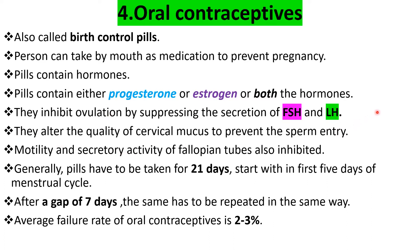Another function of the pills is making the cervical mucus become thick. Normally in the cervical region, mucus is very thin and allows sperms to swim easily towards the uterus. When the mucus becomes thick, sperms find difficulty moving towards the uterus. Additionally, the motility and secretory activity of fallopian tubes is also inhibited.